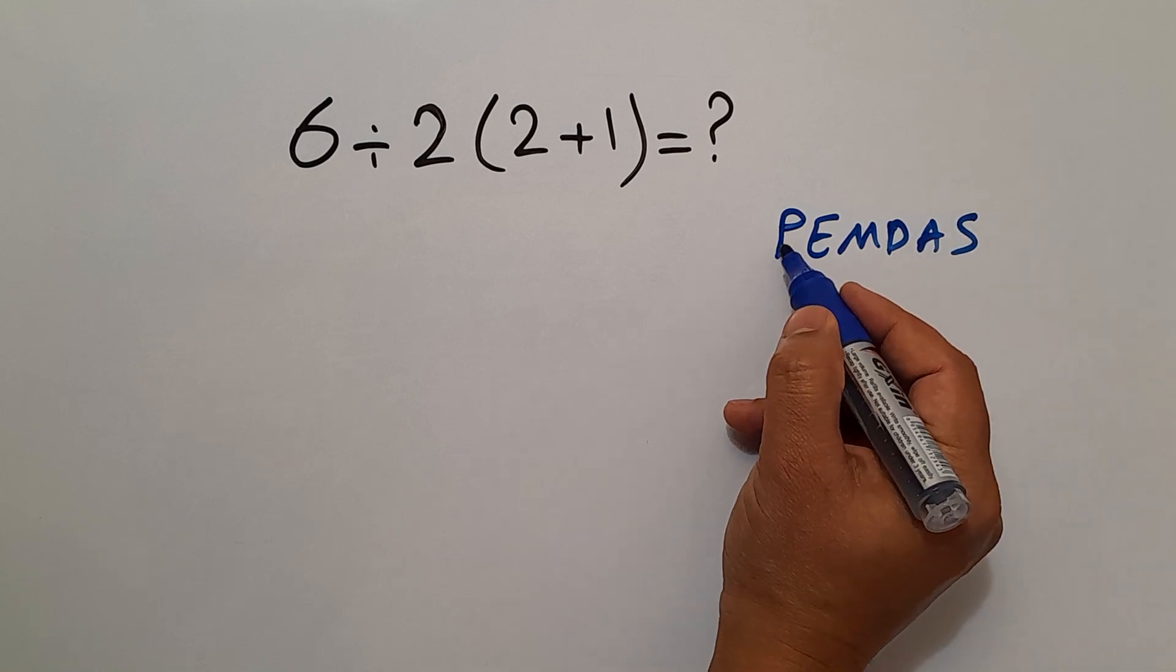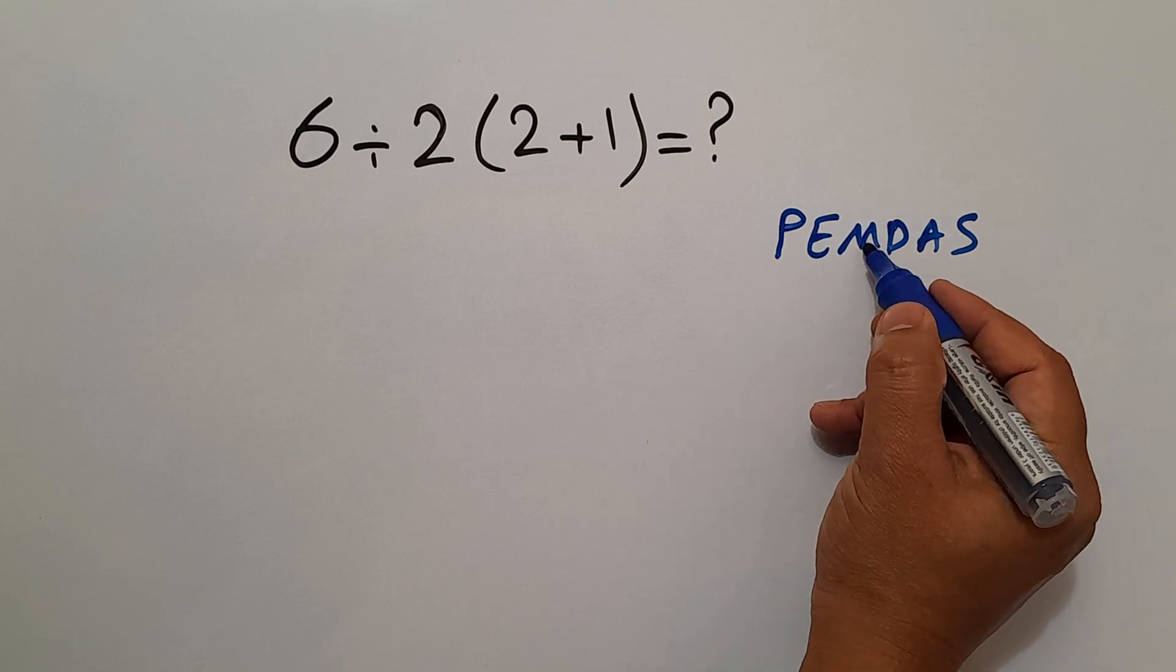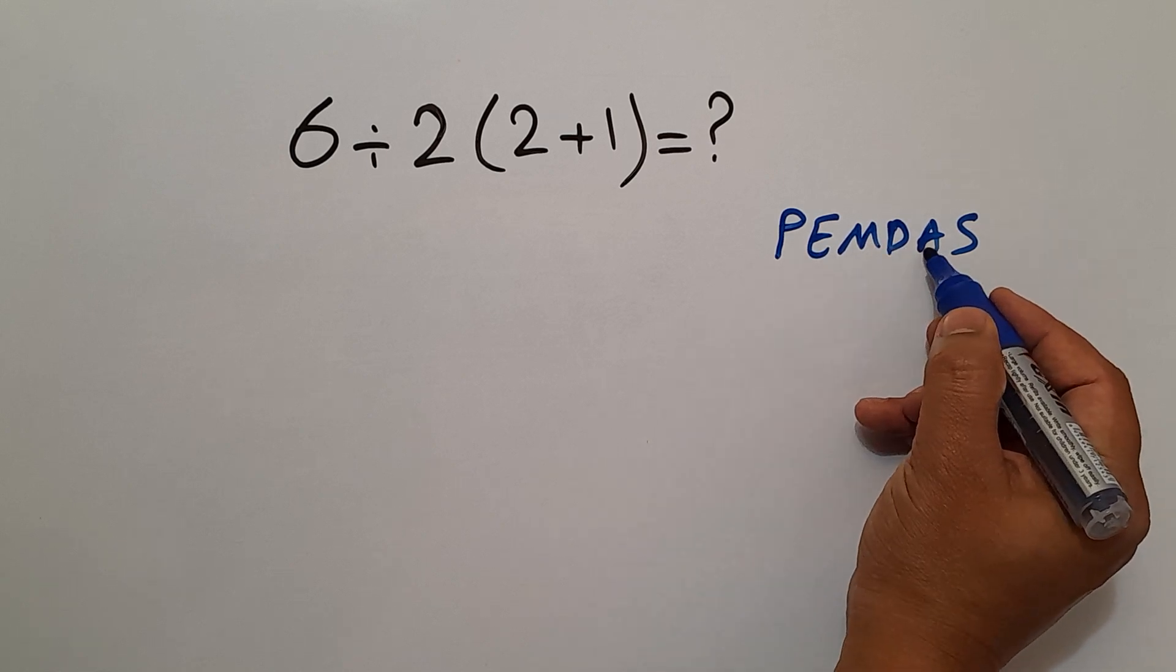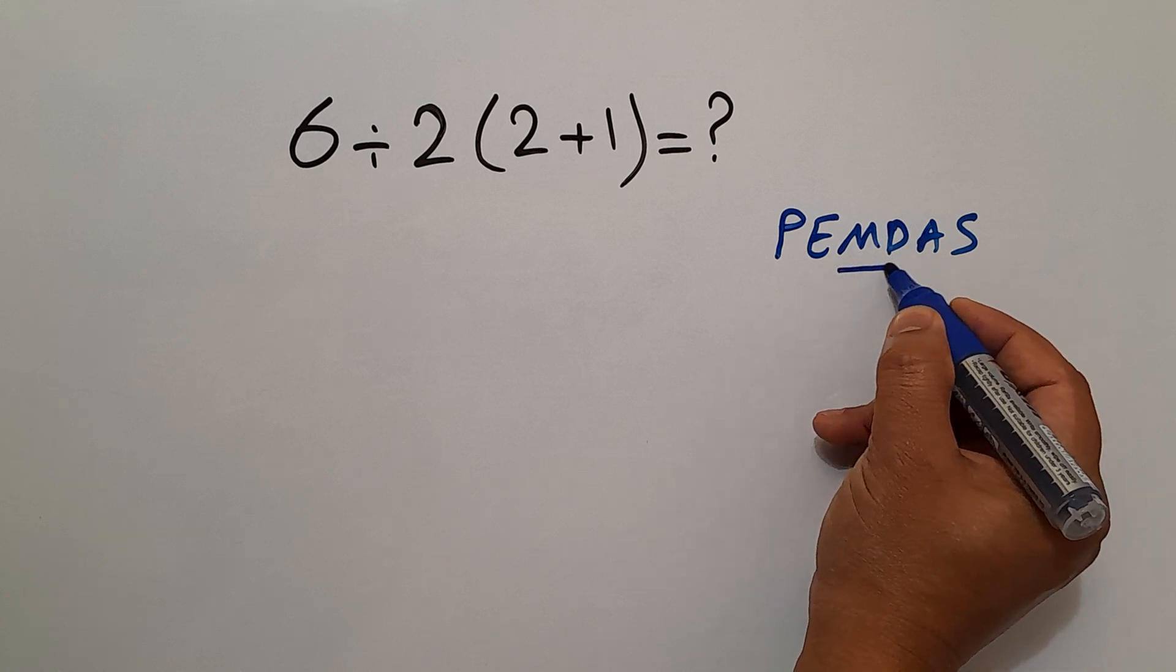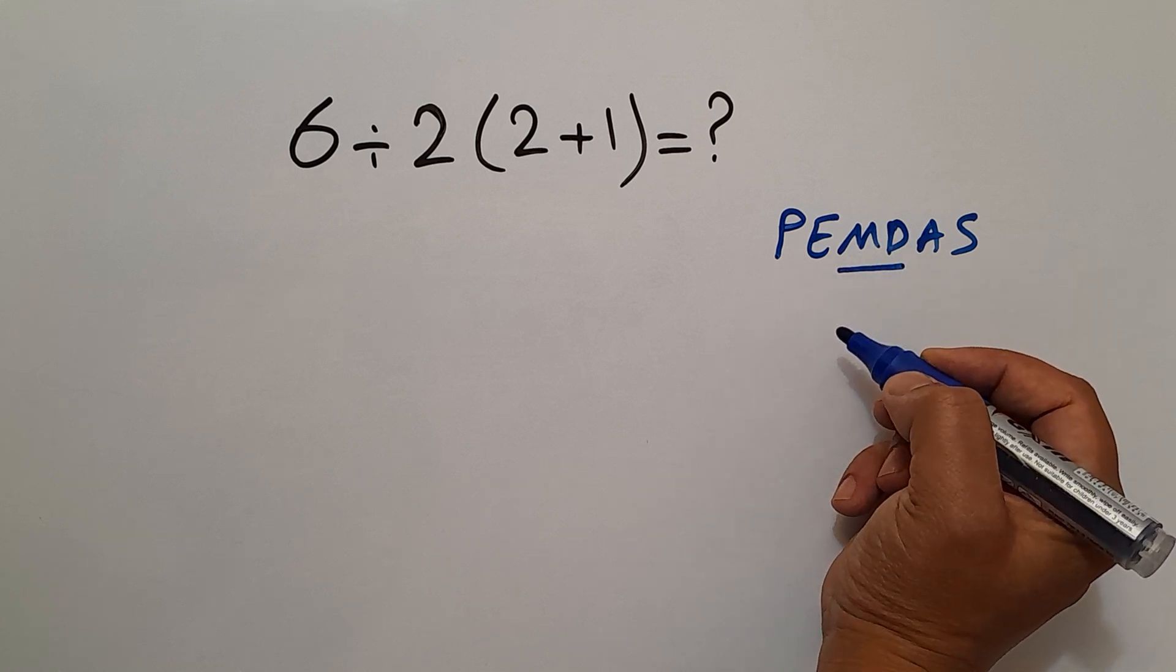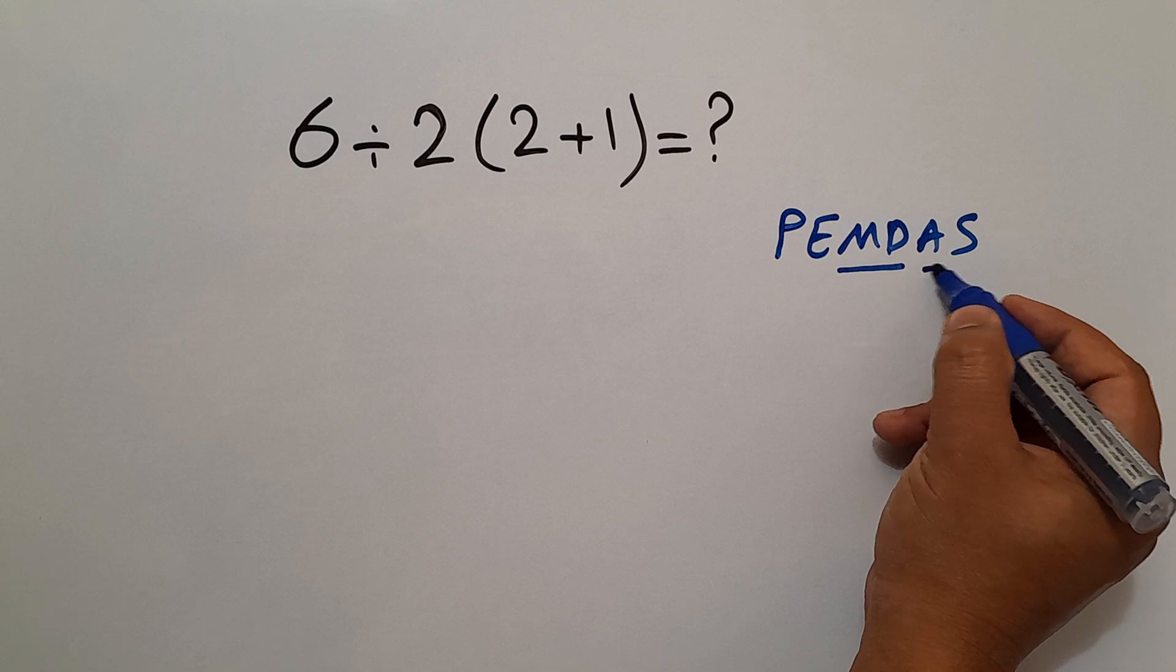We first do parentheses, then exponents, then multiplication and division, and finally addition and subtraction. Remember that multiplication and division have equal priority, and we have to work from left to right. And the same applies to addition and subtraction.